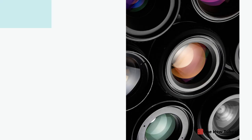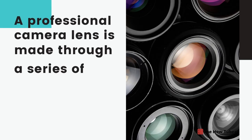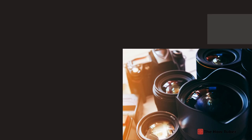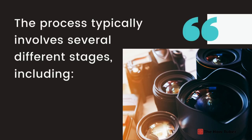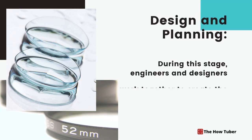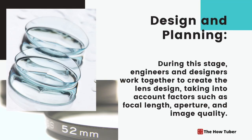A professional camera lens is made through a series of complex manufacturing processes. The process typically involves several different stages, including the first step: design and planning.